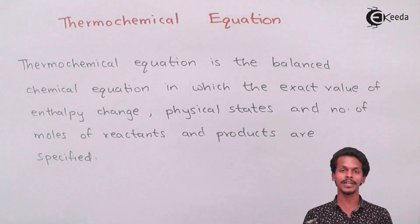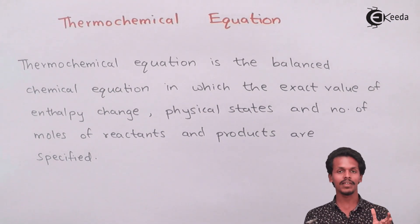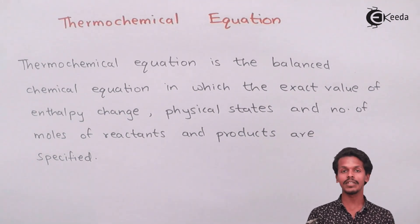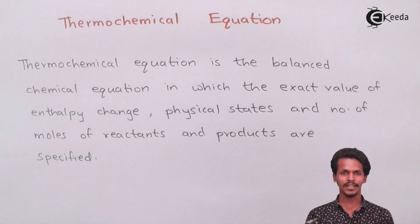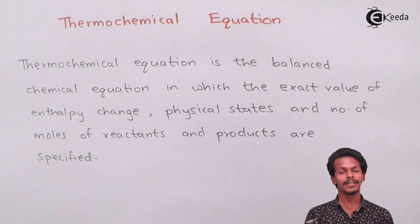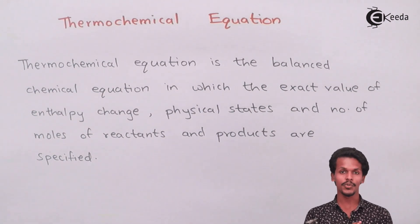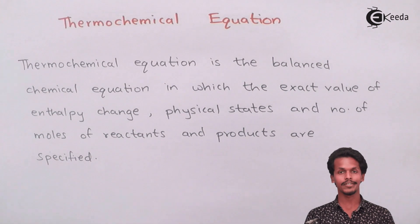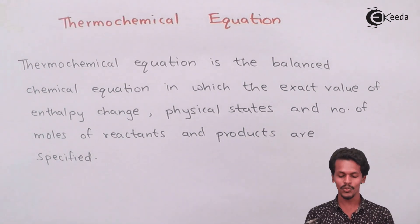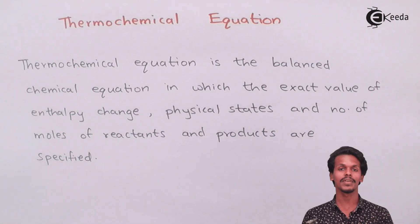If all of these things — number of moles, enthalpy change, and physical states — are mentioned in a reaction, it is called a thermochemical equation. In a normal chemical equation we don't mention enthalpy, but in thermochemistry or chemical thermodynamics, the change in enthalpy must be mentioned, and that is what makes a normal chemical reaction into a thermochemical equation.